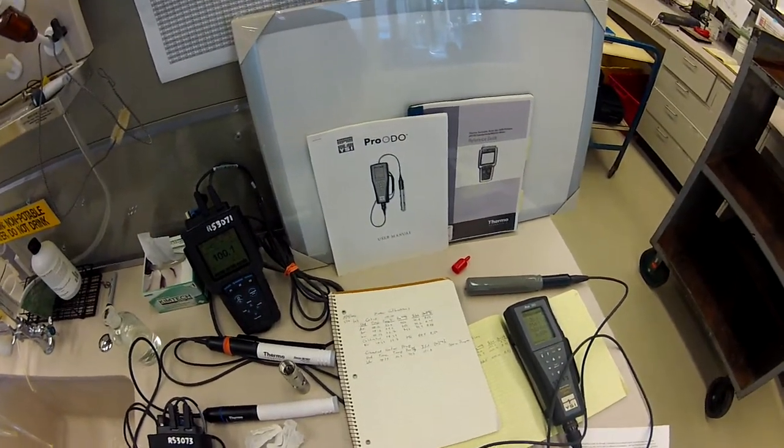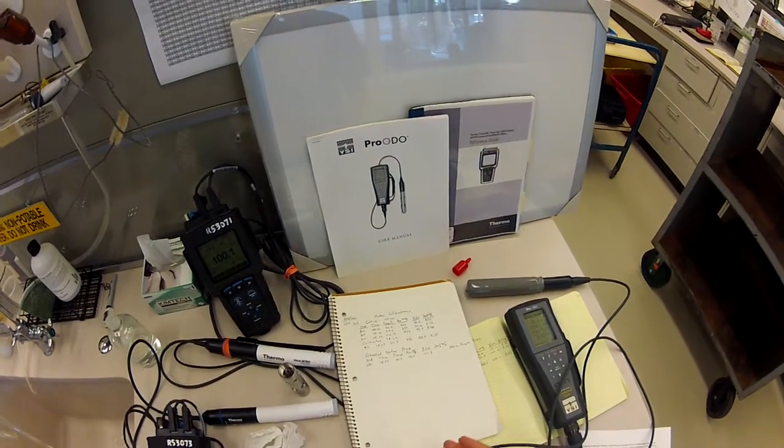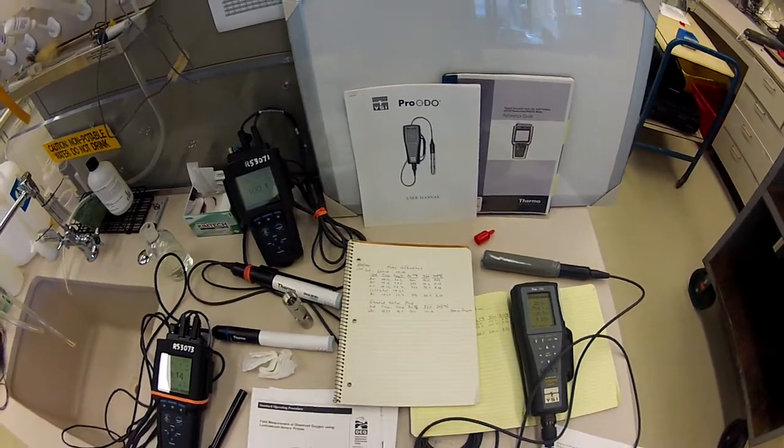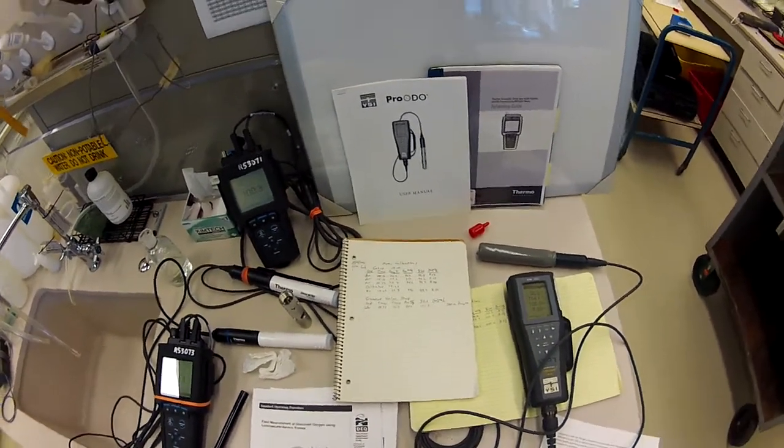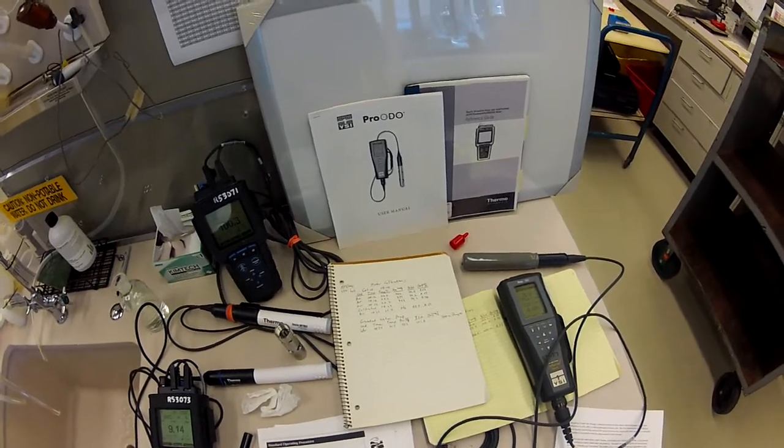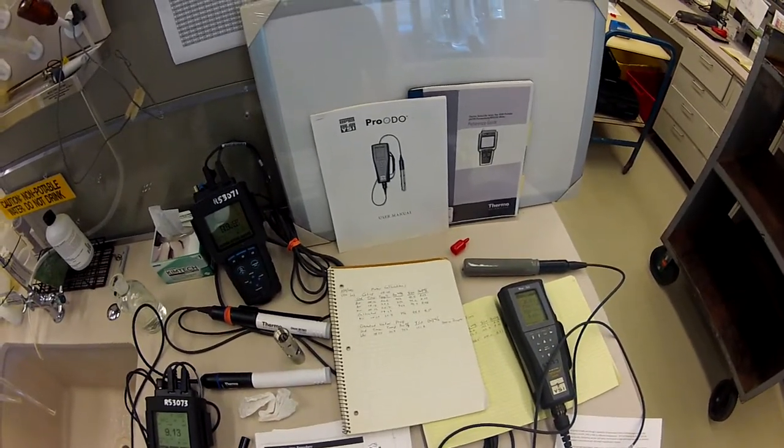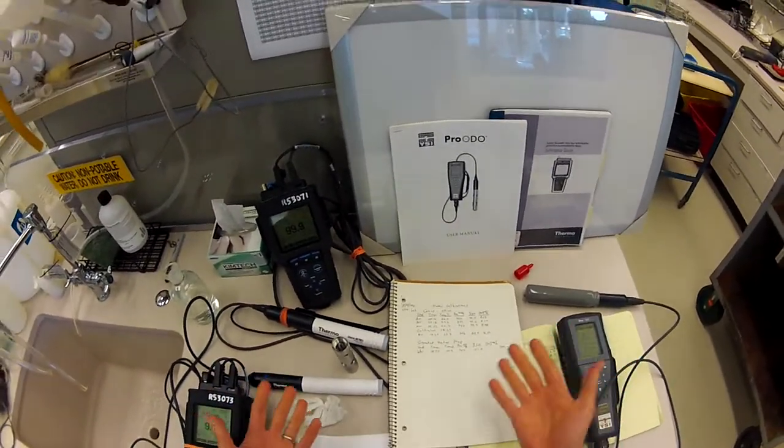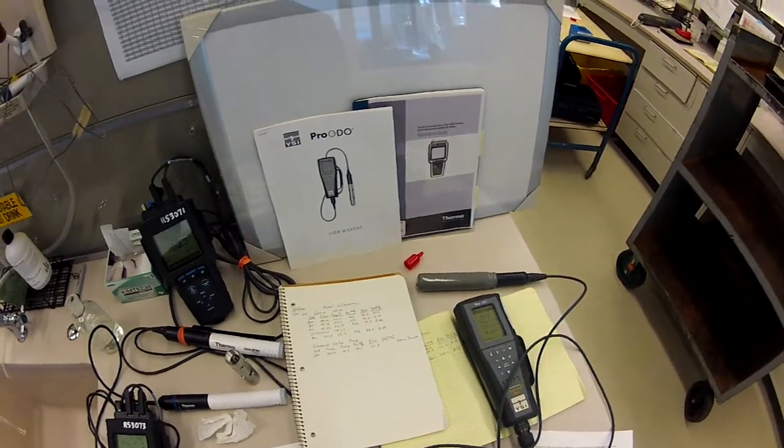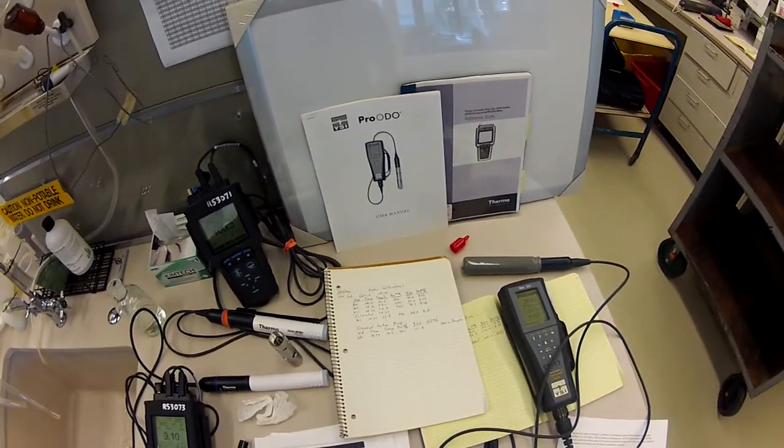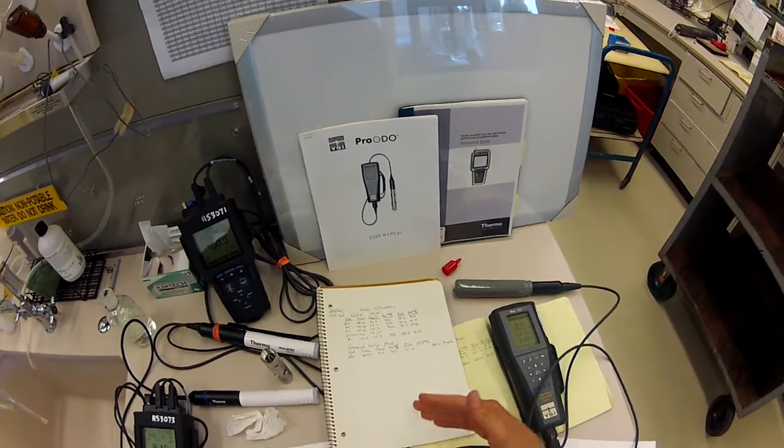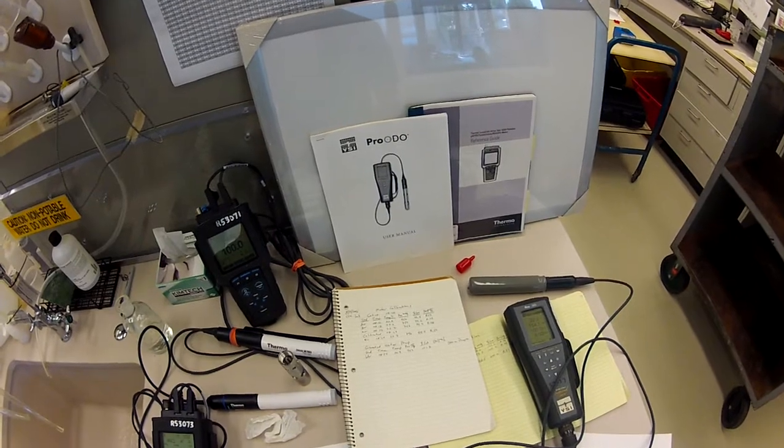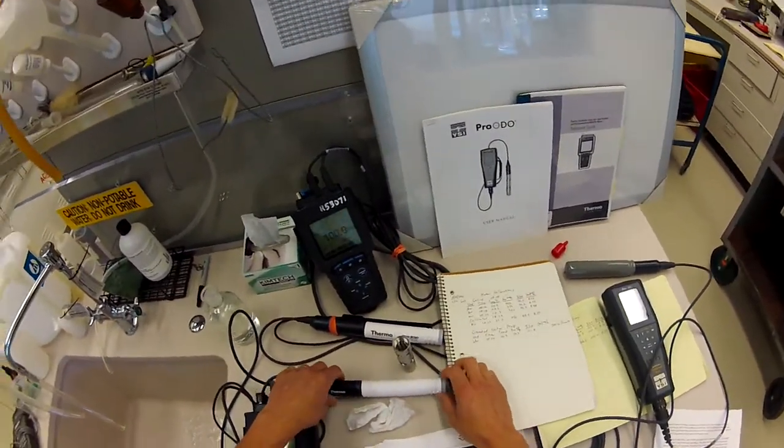So keep that in mind - be critical of your standard that you're creating. You're not pouring something out of a bottle that's some approved lot by NIST or something like that. With these calibration standards you're creating it yourself, so you need to think critically. And if you feel like the environment that you're working in is not giving you a stable environment like we have here in the lab, then maybe it's better to not recalibrate but to just try to do verifications and make sure that your initial calibration is still holding. With these LDO probes, they quite often do.